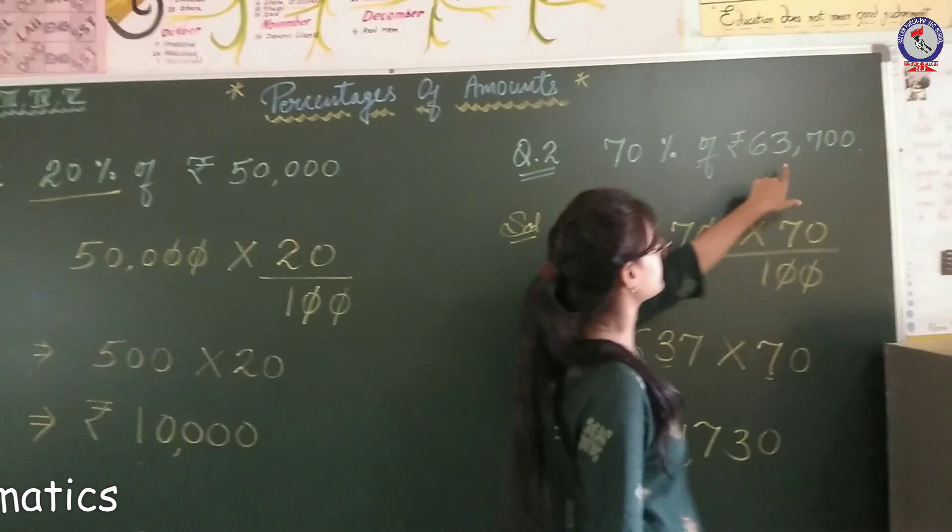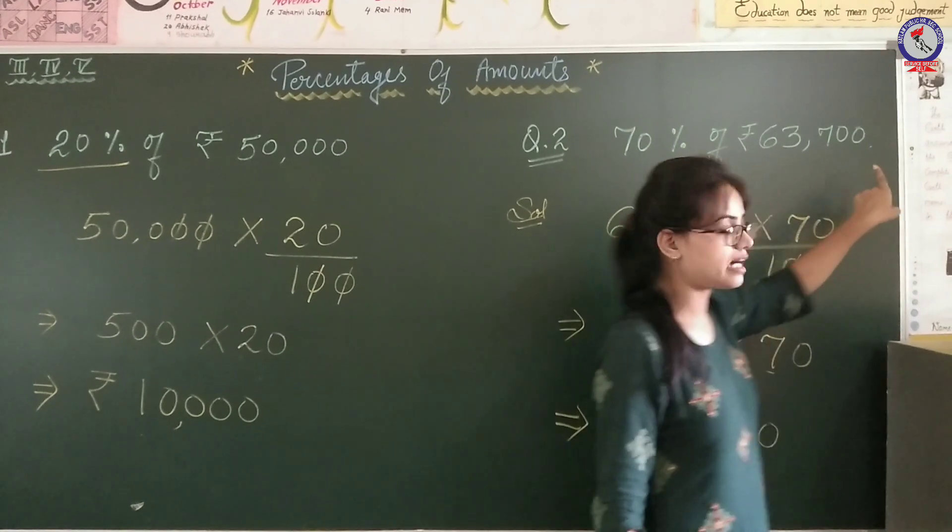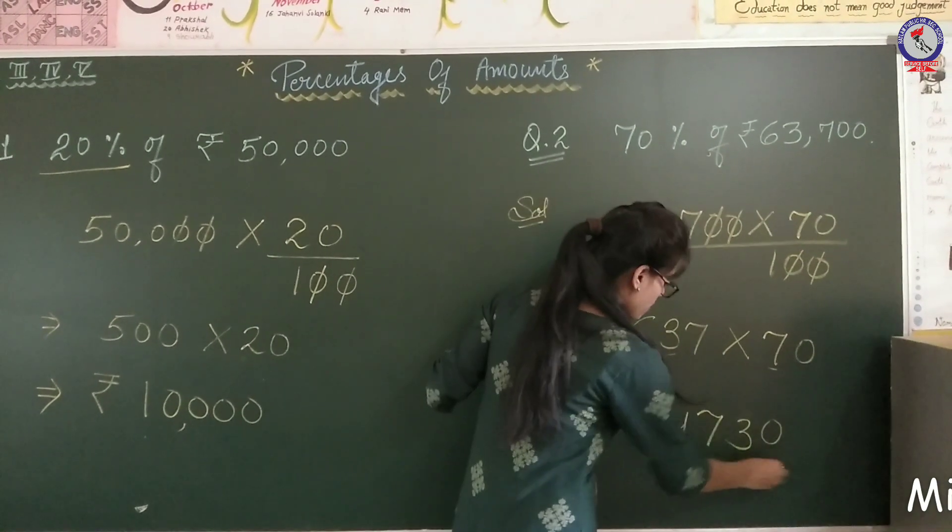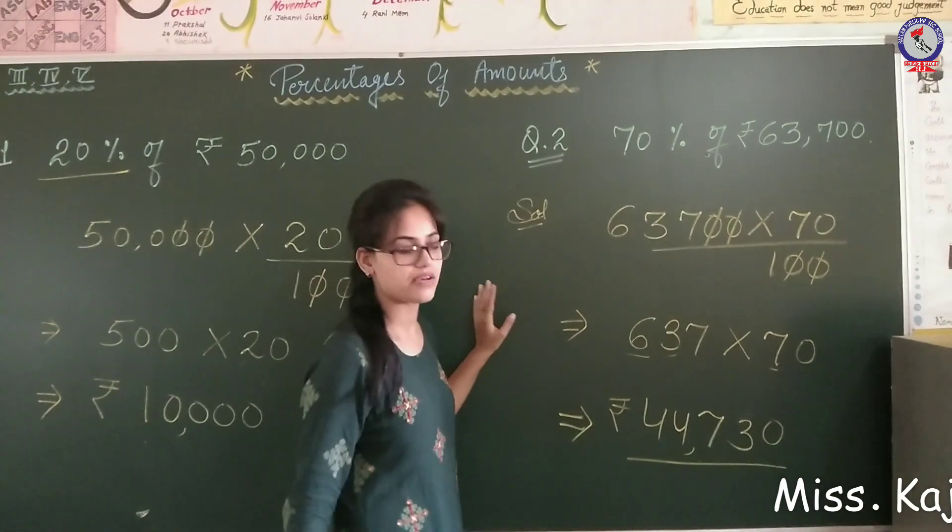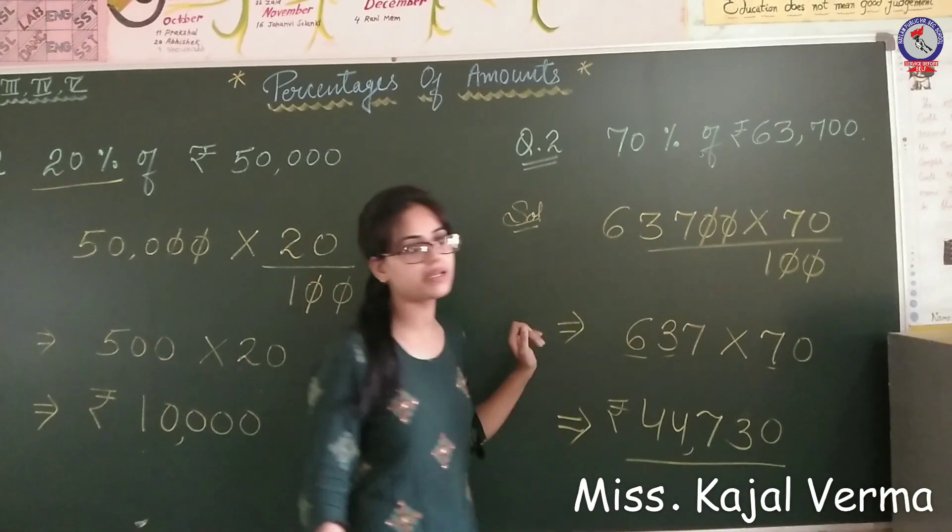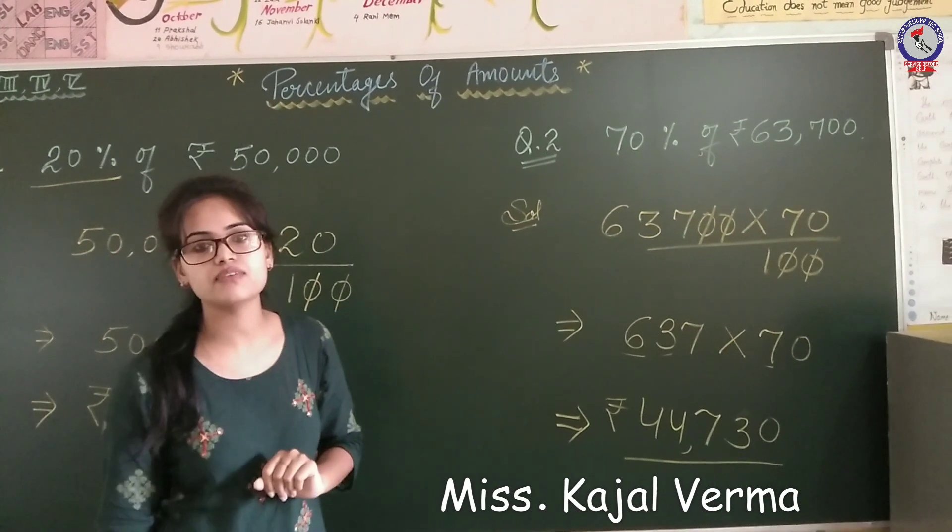So 70% of 63,700 is 44,730. In this way, we can easily find the percentage of any amount.